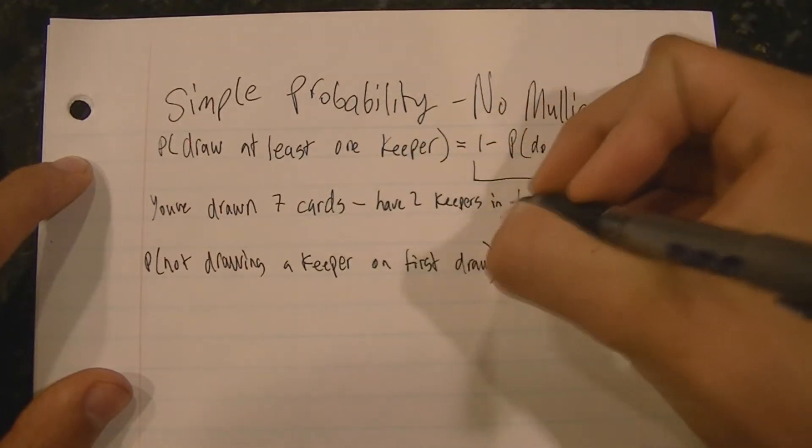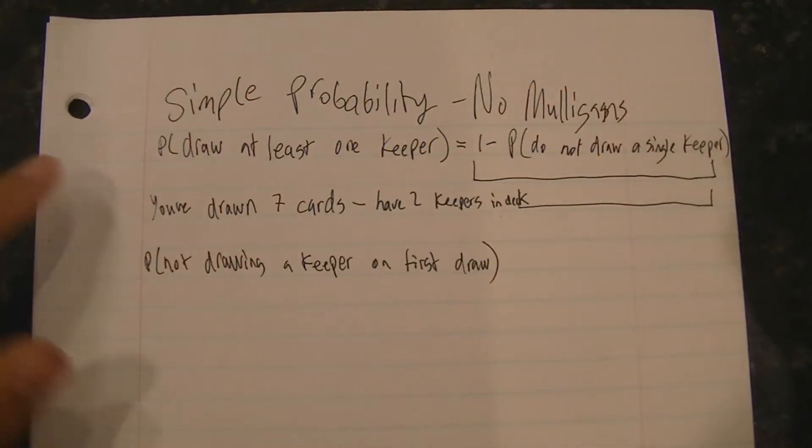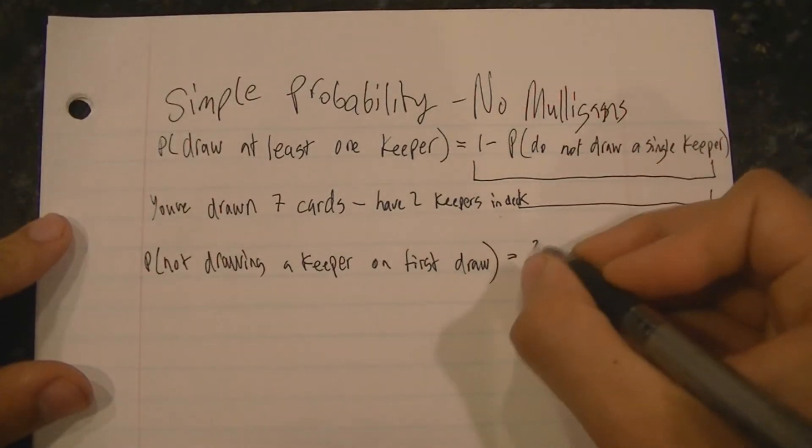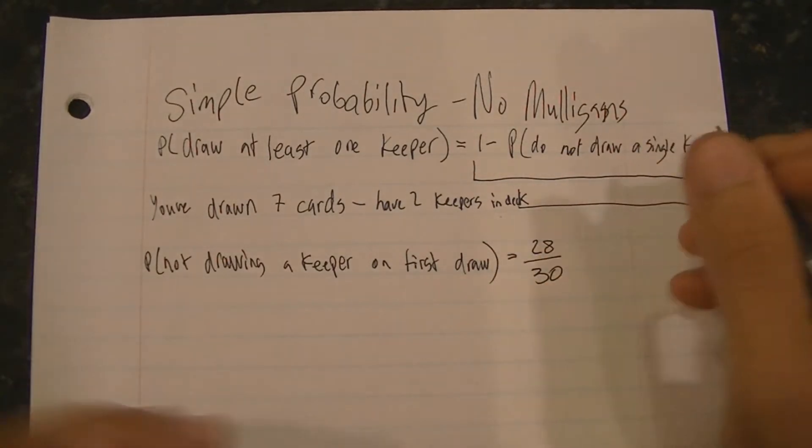So in this case, with two Keepers in your deck, the probability that the first time you draw a card is not a Keeper is 28 over 30.